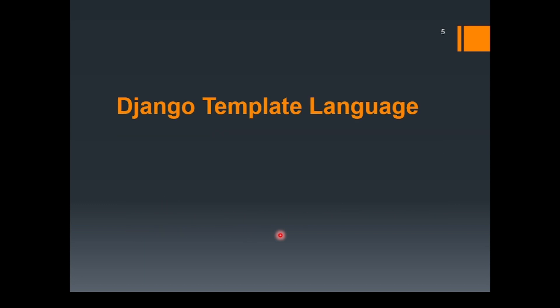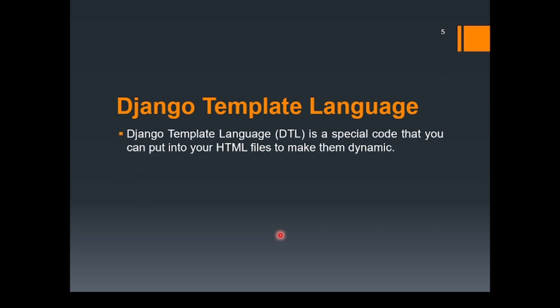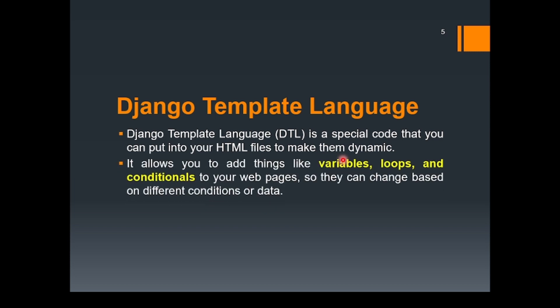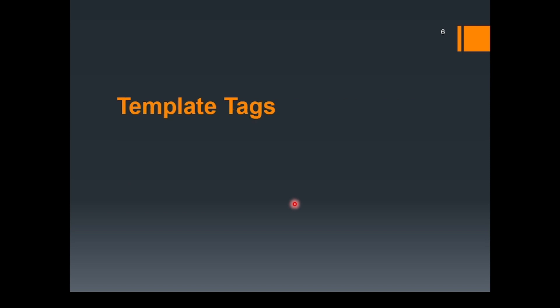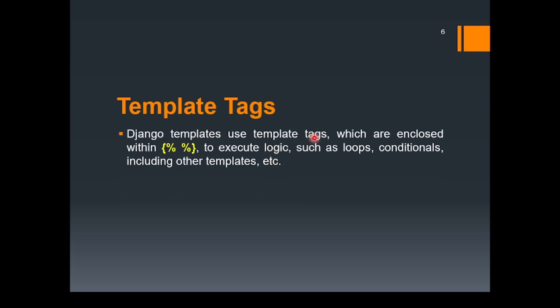Now let's come to the Django template language, which is an important feature in Django. The Django template language is special code that you can put into your HTML files to make them dynamic. It allows you to add variables, loops, and conditionals to your web pages so that content can change based on different conditions or data. Template tags are enclosed within curly braces with percentage symbols.